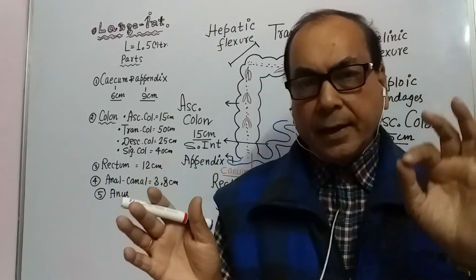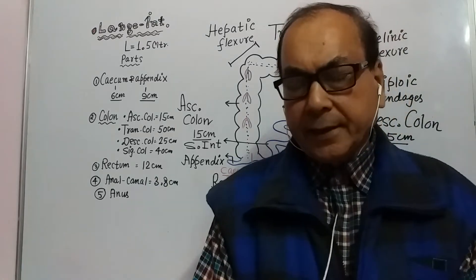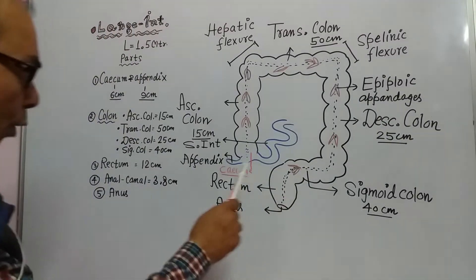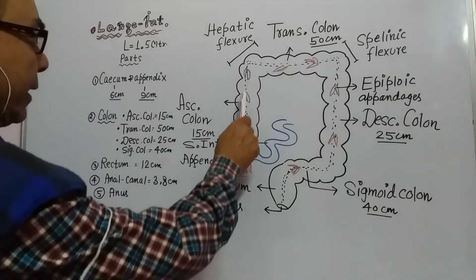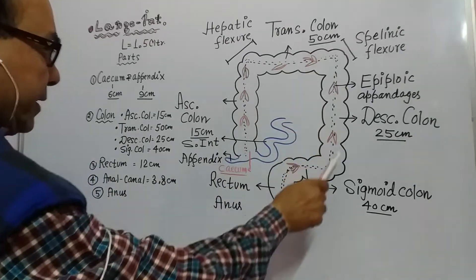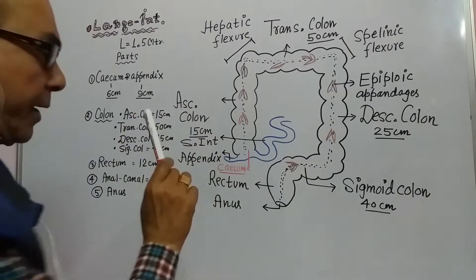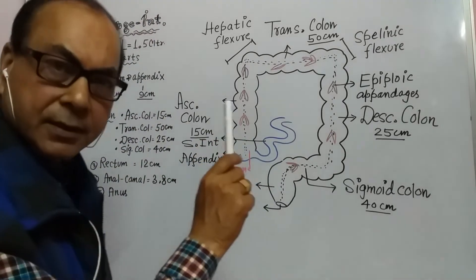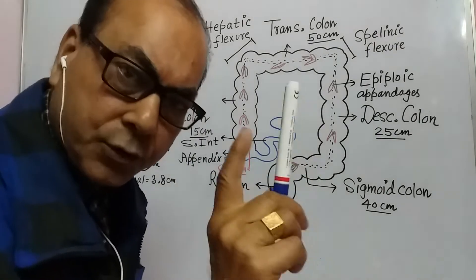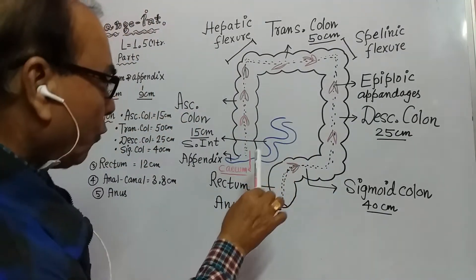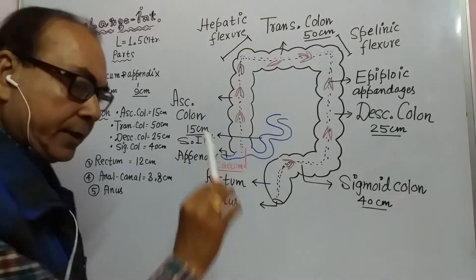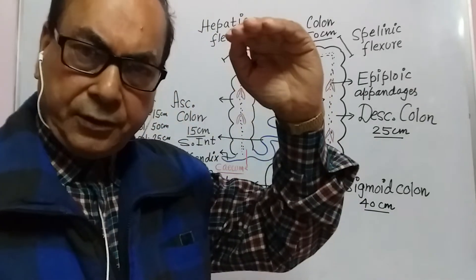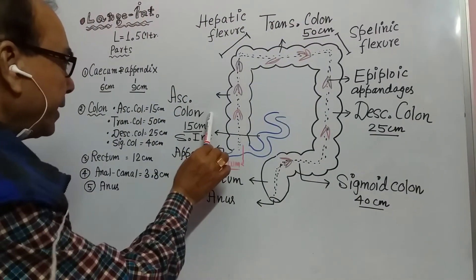The Large Intestine is a very important part of the alimentary canal. Now with the help of a simple diagram, this is the diagrammatic presentation of the Large Intestine, which is 1.5 meters in length. It has four important parts. The first part goes in the upward direction, and that is called the ascending colon.